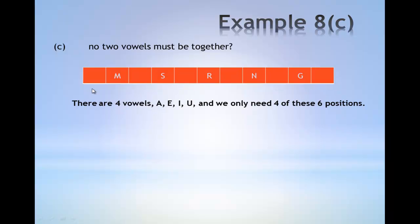There are four vowels A, E, I, U and we only need four of these six positions. There will be six times five times four times three, given by permutating four out of six different letters to permute these four vowels in the six slots.